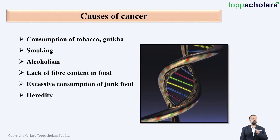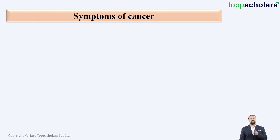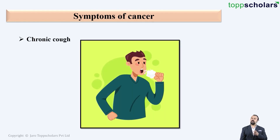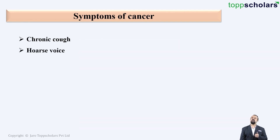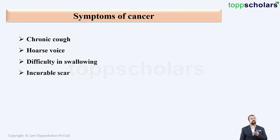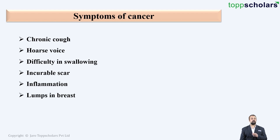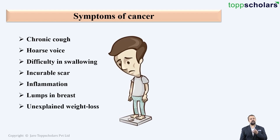You may carry certain genes which may eventually lead to cancer in your life. Now let us take a look at the symptoms of cancer. These include chronic cough, which is seen in lung cancer, hoarse voice, difficulty in swallowing, incurable scars or wounds, inflammation, lumps in the breast, and unexplained weight loss.